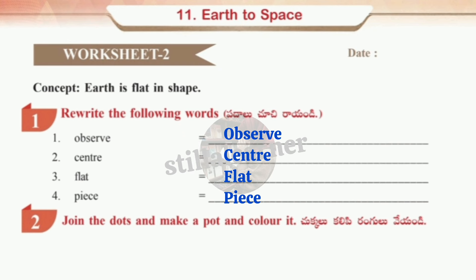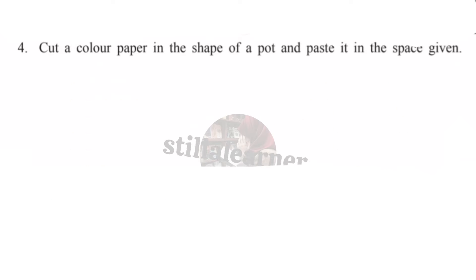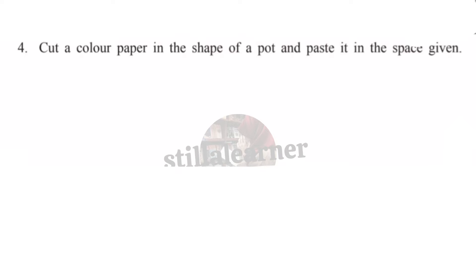Question three: How can you say that the earth is round? Answer: Portuguese sailor Ferdinand Magellan sailed with his team to round the world. Surprisingly, they reached back to the place where they started, which shows that the earth is round.